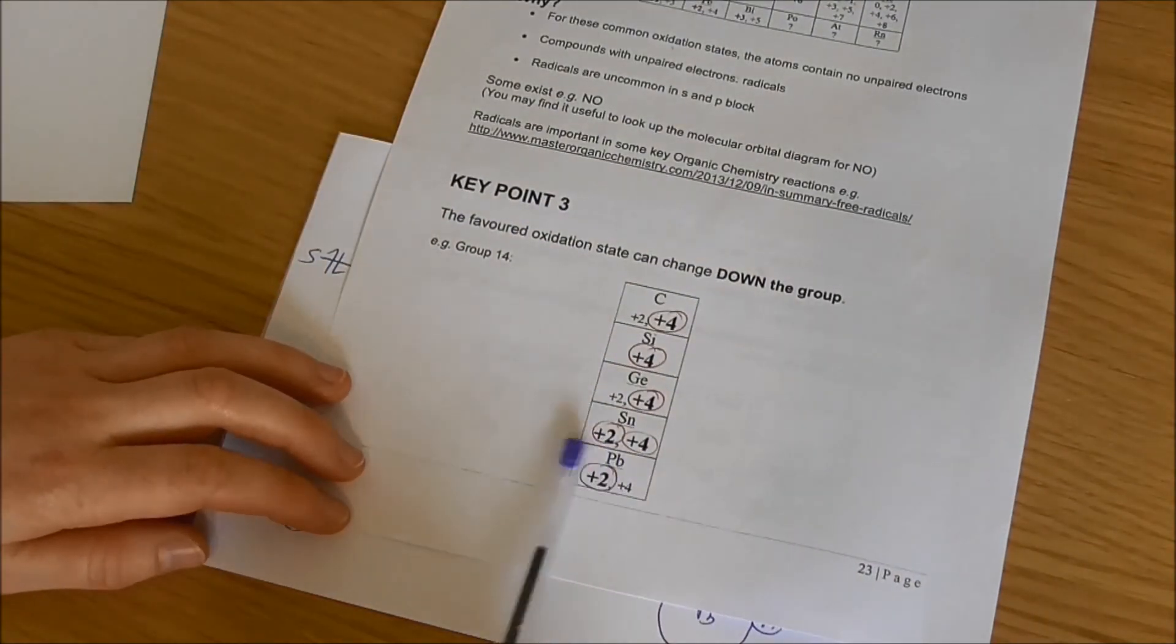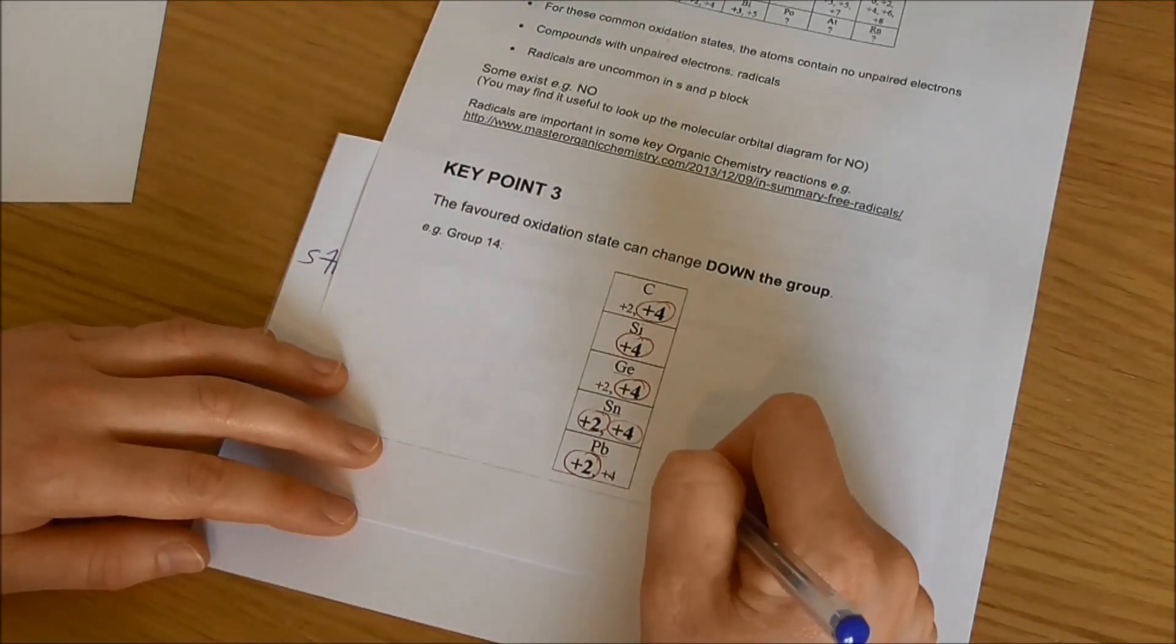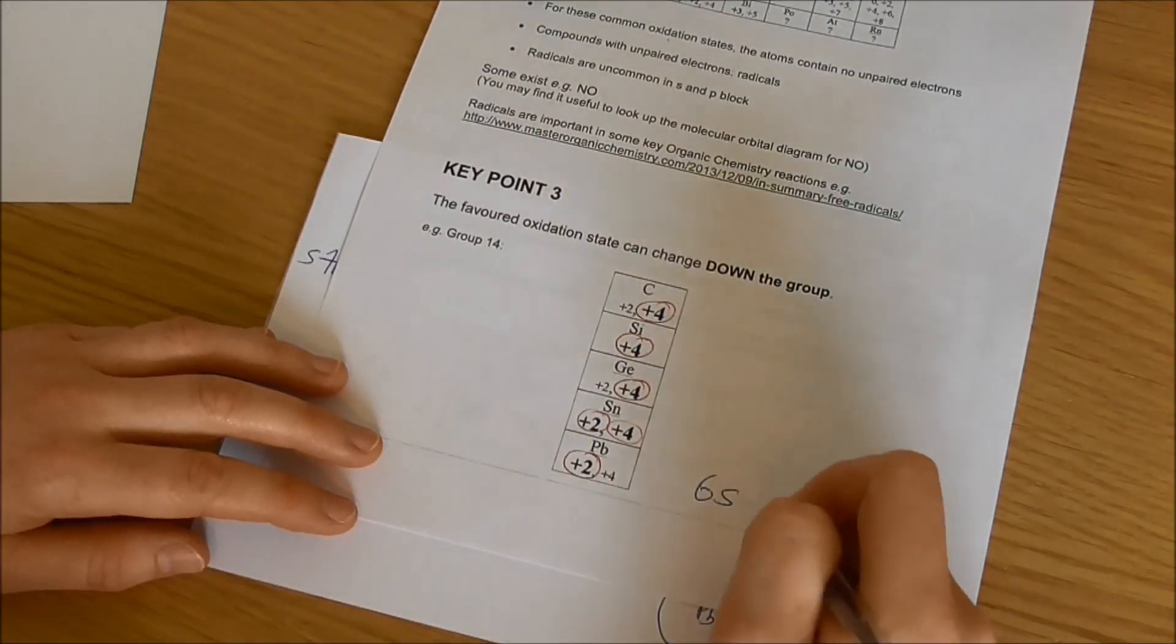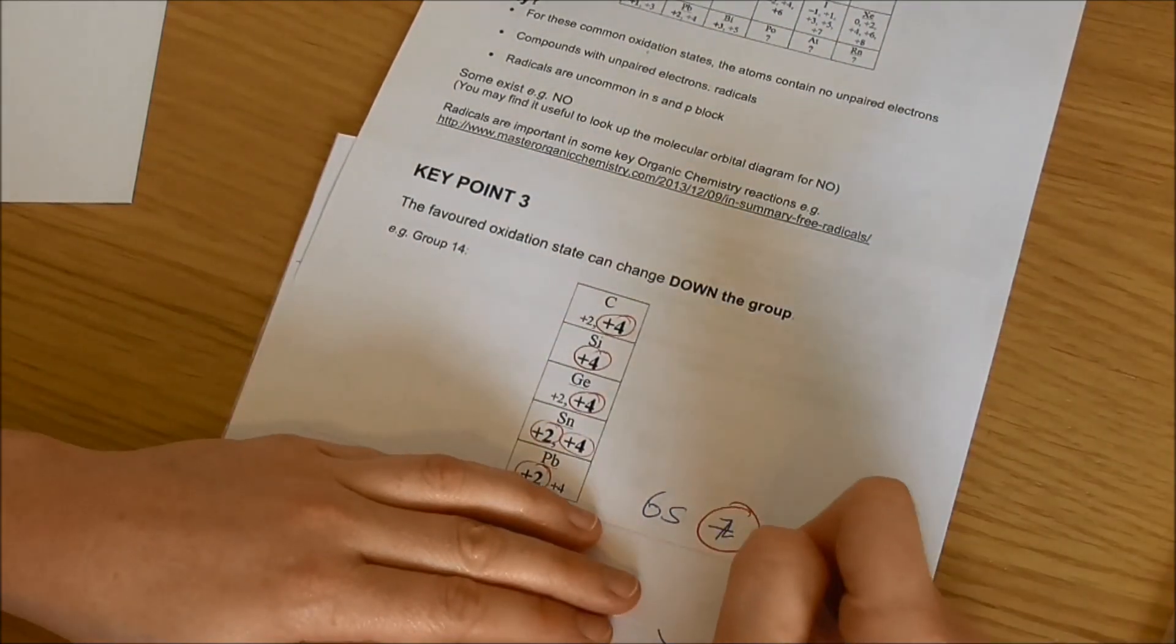Lead tends to stay in the plus 2 oxidation state. It leaves those electrons out of bonding and it's those s electrons, in lead's case the 6s electrons left out of bonding, these are the inert pair.